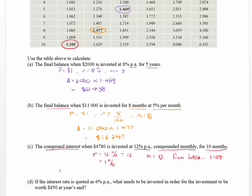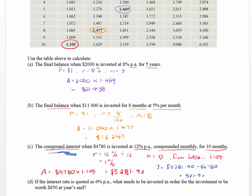Multiplying 4,780 × 1.105 gives a final amount of five thousand two hundred and eighty-one dollars and ninety cents. But the question asks for the compound interest, not the final balance. So we subtract the original principal: interest = 5,281.90 − 4,780 = five hundred and one dollars and ninety cents. That is the interest earned.